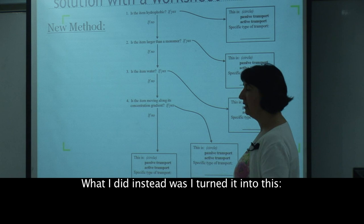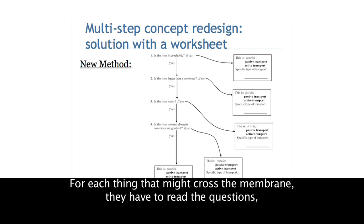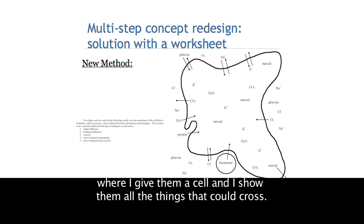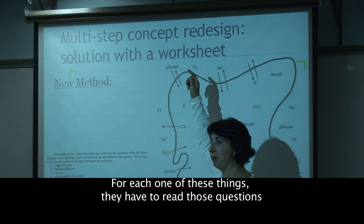What I did instead was I turned it into this. There are five methods I want them to focus on, and here are the four questions. For each thing that might cross the membrane, they have to read the question, say yes or no, and then follow the arrow. So this is just the plan for it. Then there's an application where I give them a cell and show them all the things that could cross.